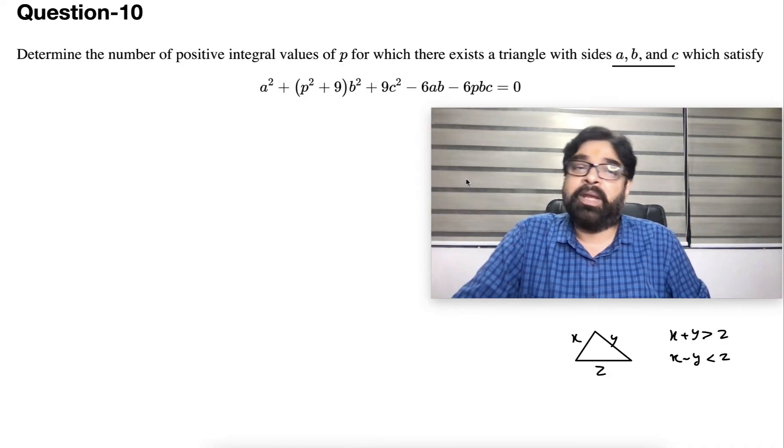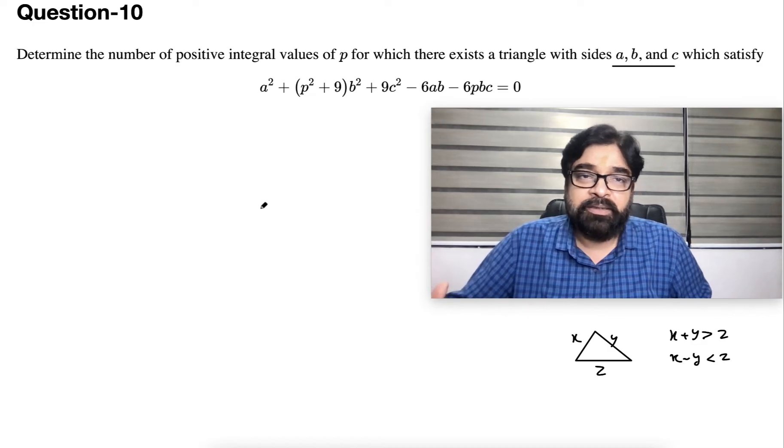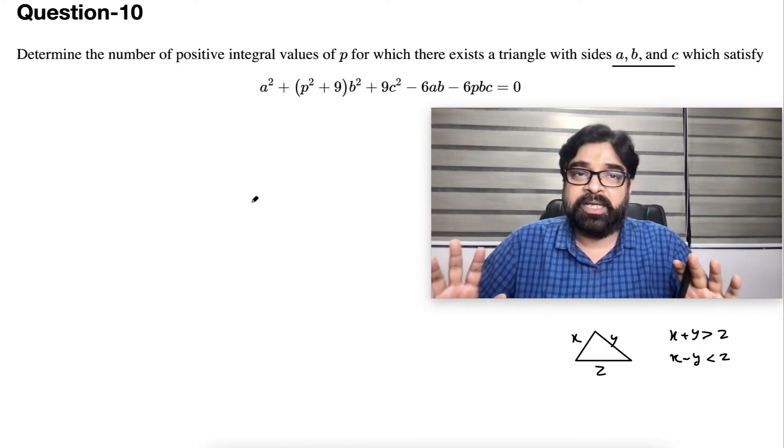So directly, the moment they say the sides of a triangle, it means triangle inequality can be applied. p is unknown and we can find the integral values. That's the basic idea.